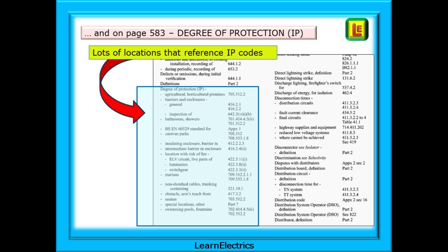Any regulation beginning with a 700 number, such as 701, 702, etc., will be a special location mentioned in part 7 of the book, and regulations with a 400 number will be in the general part of the regulations book under part 4 for safety.